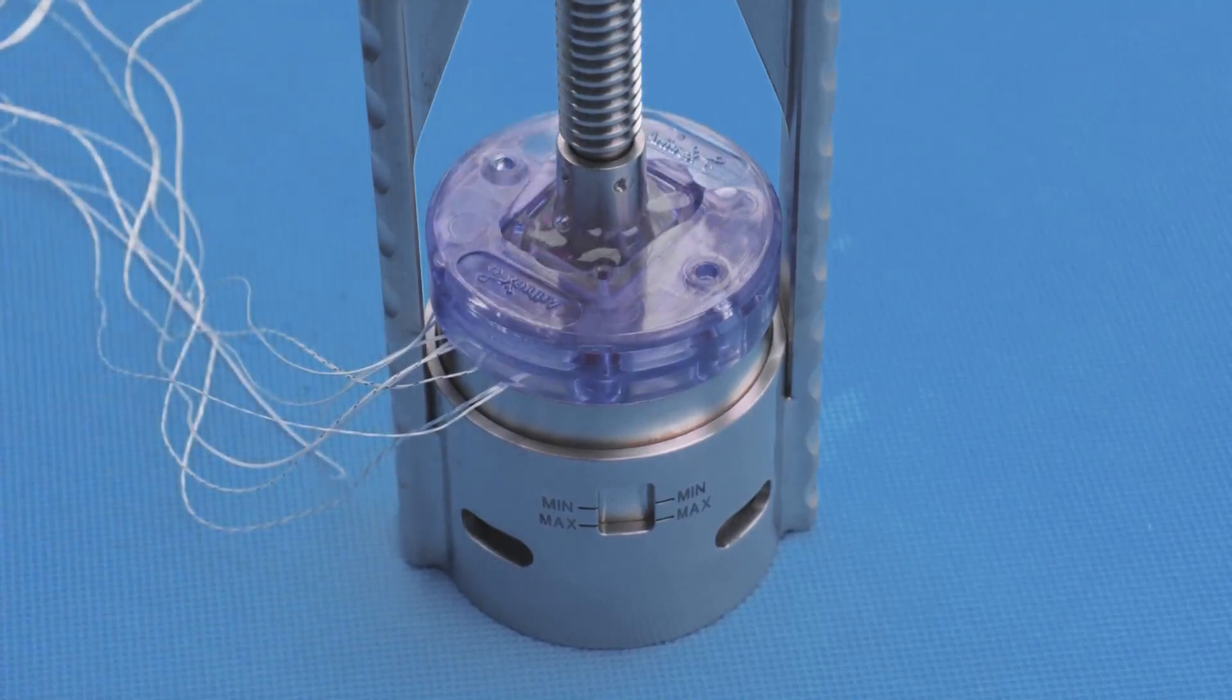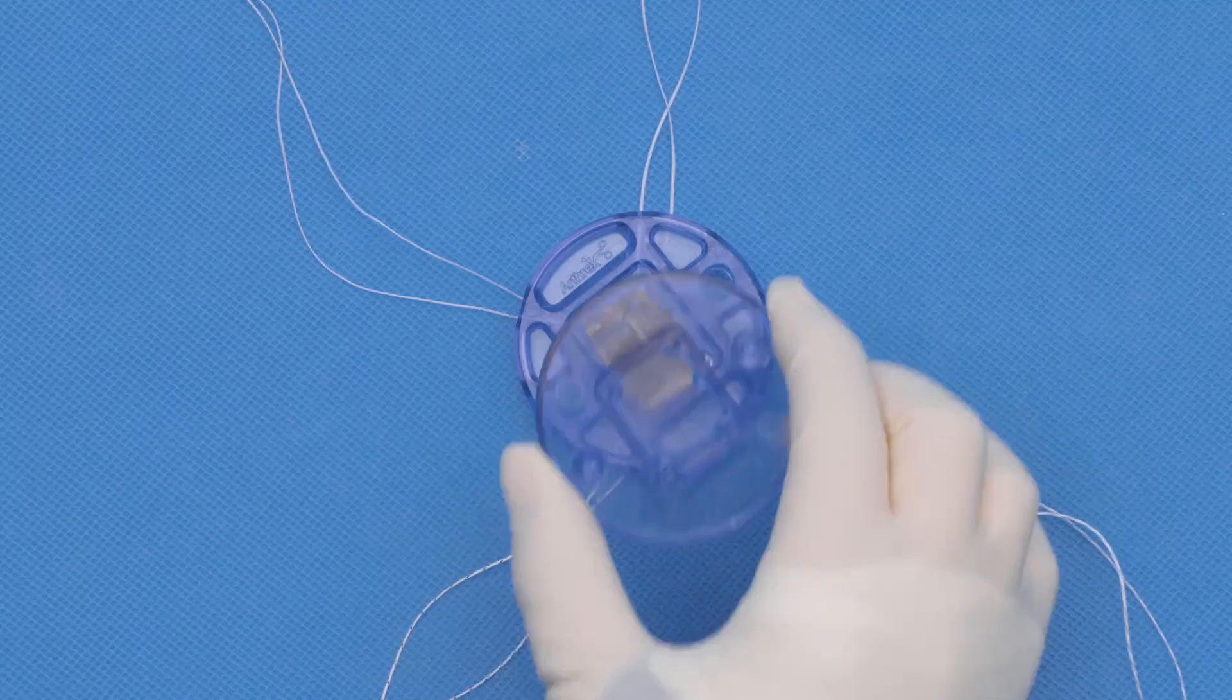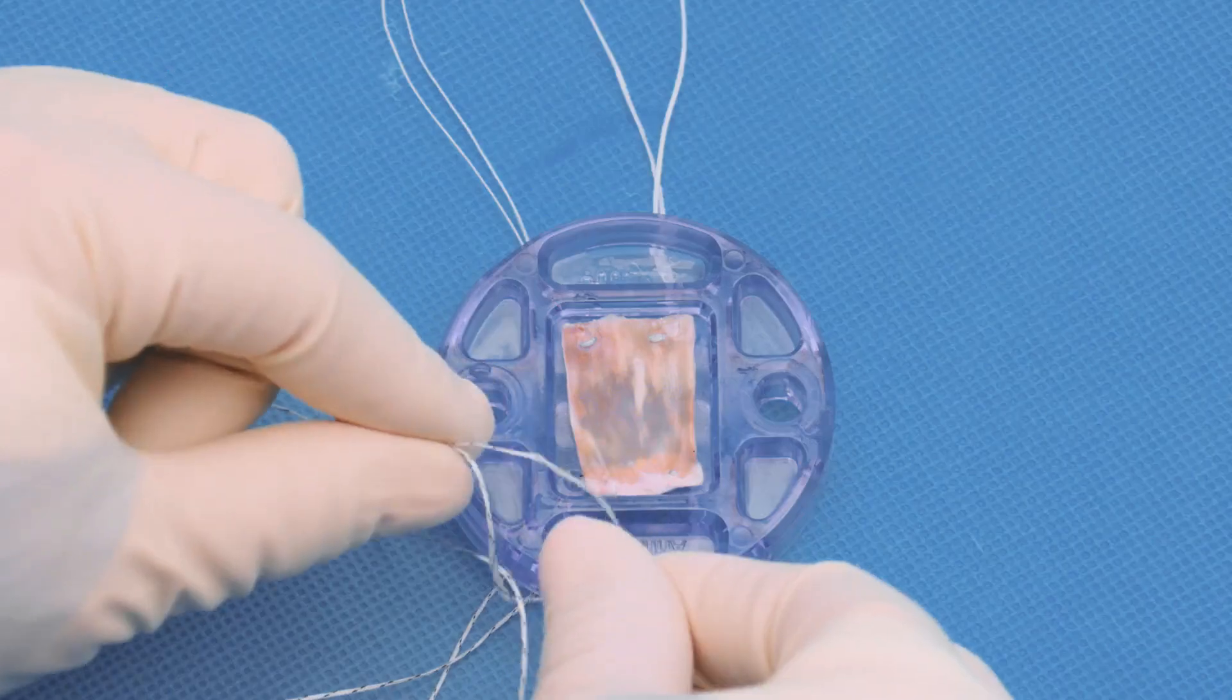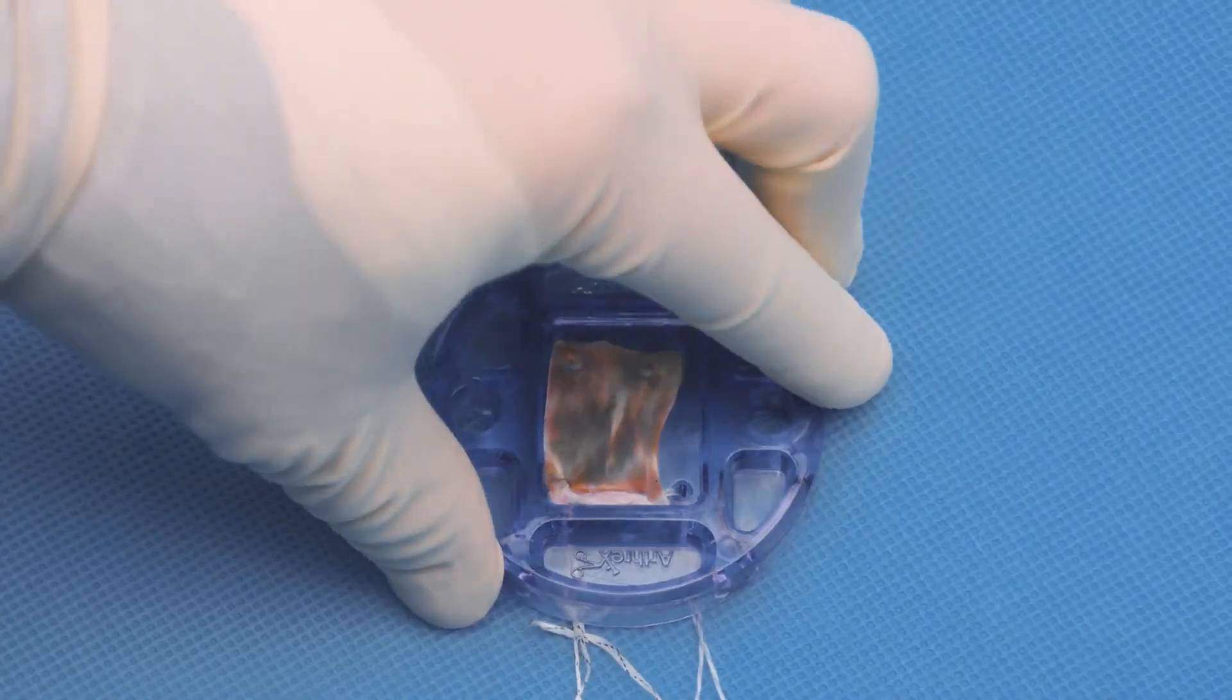When the graft is ready to be loaded into the graft spreader, remove the top plate. The fiber link suture tapes can be cinched into the plates.